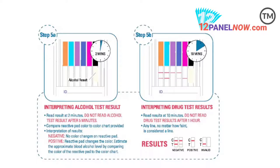For interpreting the drug test results, read results at 10 minutes. Do not read the drug test results after one hour. Any line, no matter how faint, is considered a line.